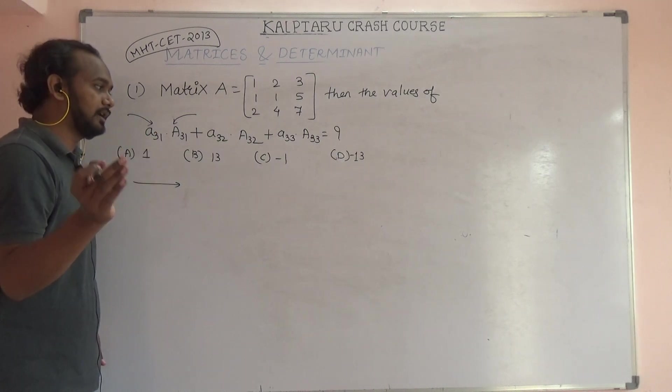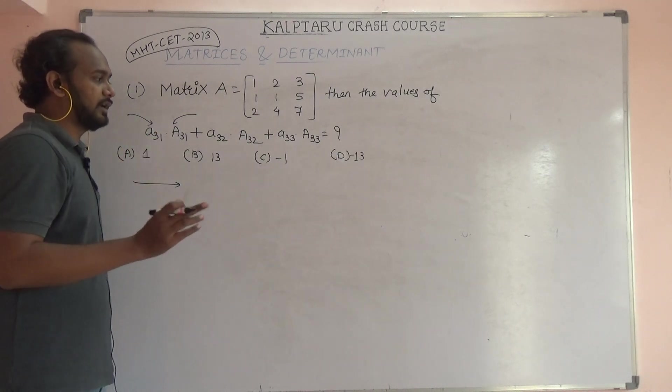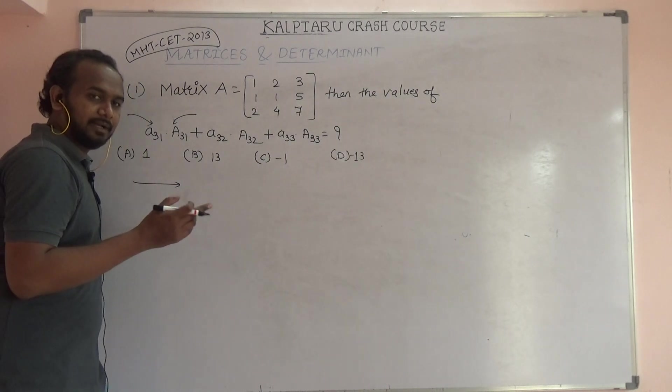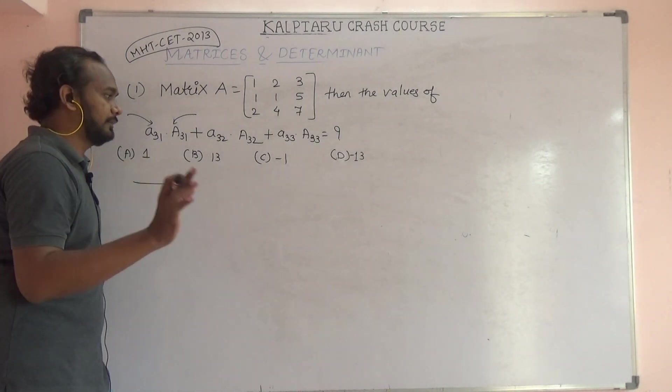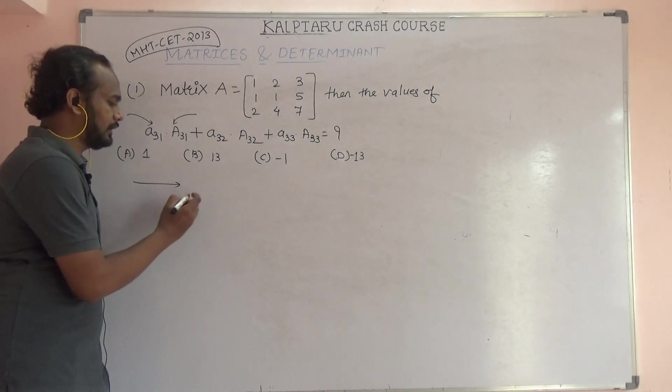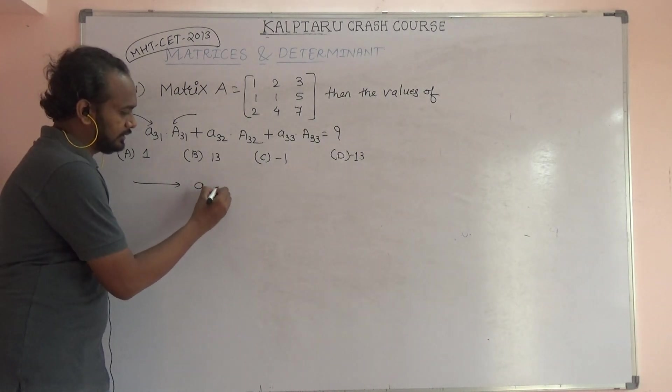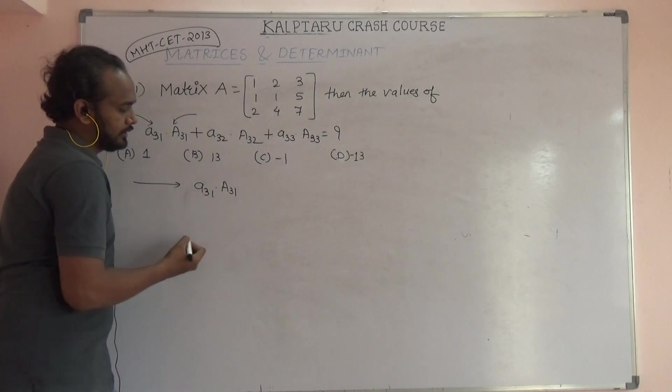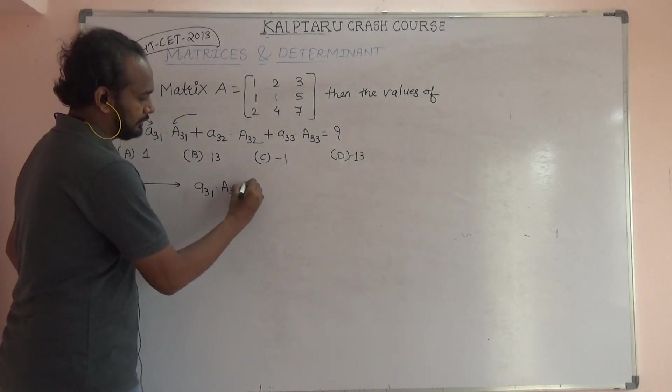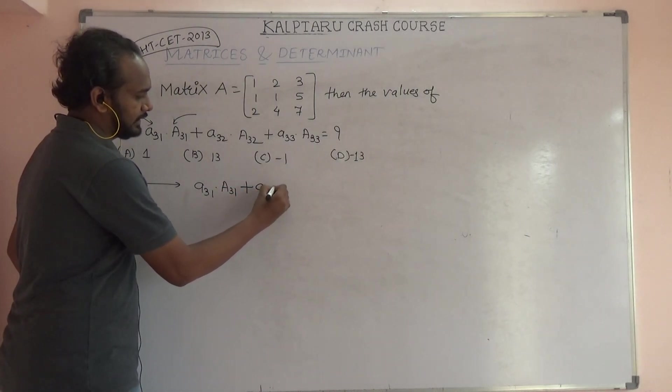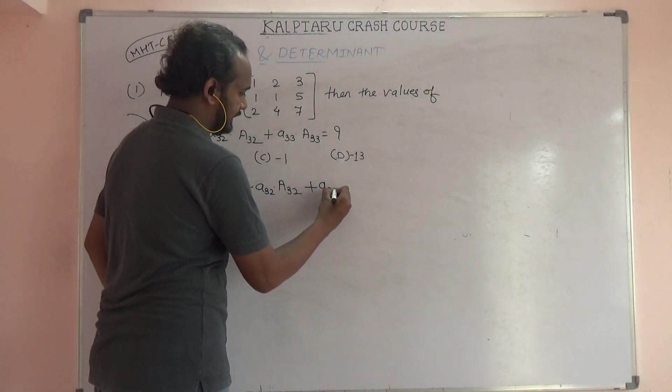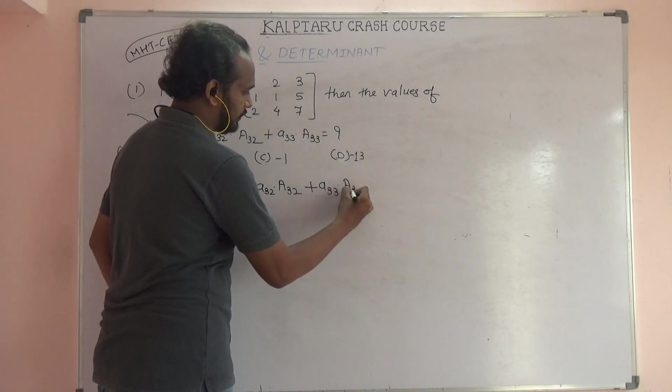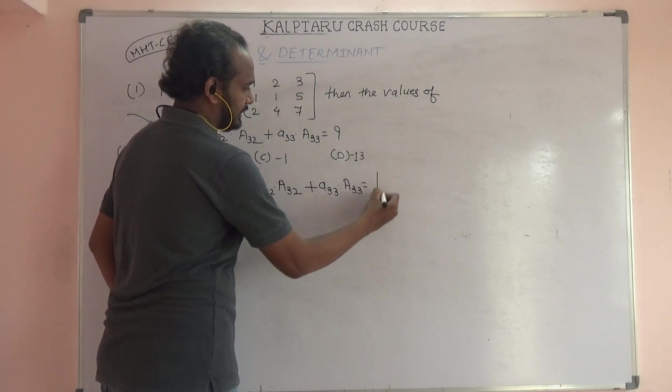In the adjoint method we solved lots of times, adjoint a31. We have to just keep in mind that is one formula: a31 into cofactor of a31 plus a32 into cofactor of a32 plus a33 into cofactor of a33.